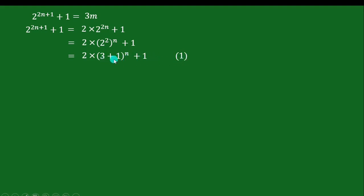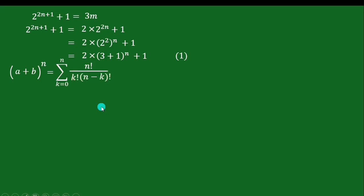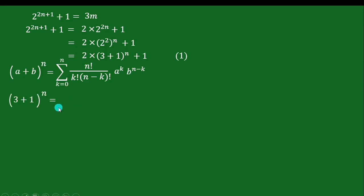Now, (3 + 1)^n can be expanded using the binomial theorem. We know from the binomial theorem that (a + b)^n can be expressed as the sum from k=0 to n of [n! / (k! · (n−k)!)] · a^k · b^(n−k). Comparing this with our expression (3 + 1)^n, we substitute a = 3 and b = 1, so we can write (3 + 1)^n as the summation with 3^k and 1^(n−k).